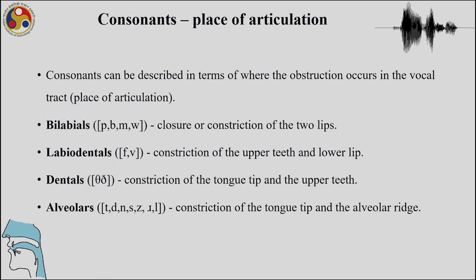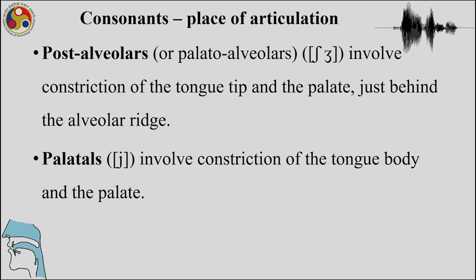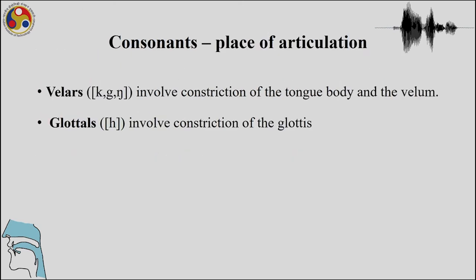Coming now to place of articulation: when the lips are involved, we have bilabials. When both the upper teeth and the lower lip are involved, we have labiodentals — a constriction of the upper teeth with the lower lip. Dentals involve constriction of the tongue tip and the upper teeth. Post-alveolars, like 'sh' in English, involve constriction of the tongue tip and the palate just behind the alveolar ridge.